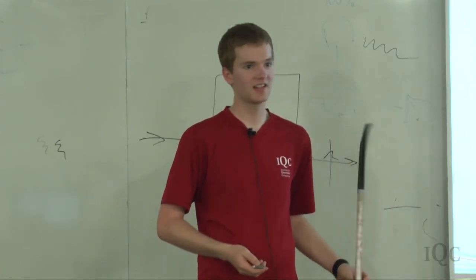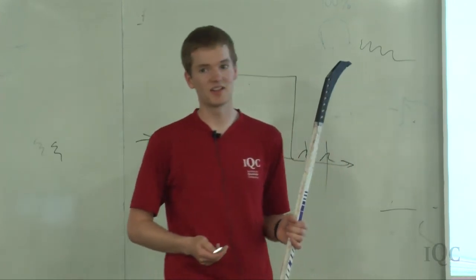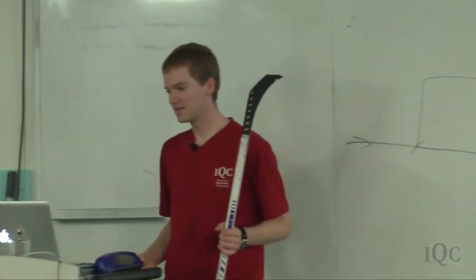So the attack is clear. Eve gains full information. Alice and Bob don't notice. So it looks like QKD is broken.